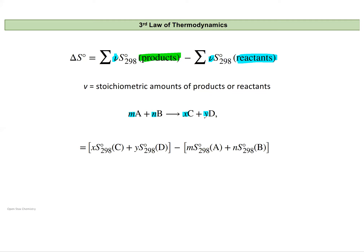So we have products minus reactants: we take the coefficient of each product and multiply it by the standard entropy looked up in a table, sum all products together, then subtract the sum of the reactants' entropies — each coefficient times the standard entropy of that material from the table.